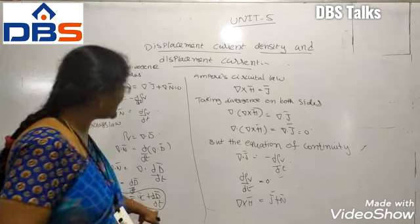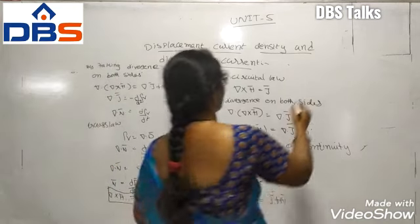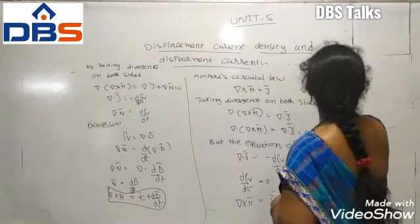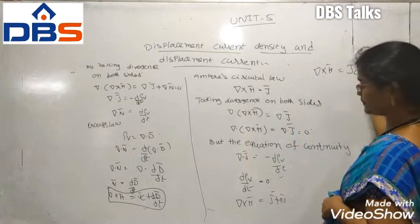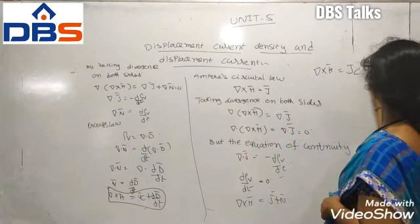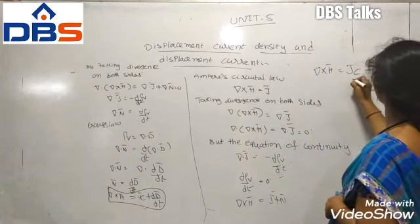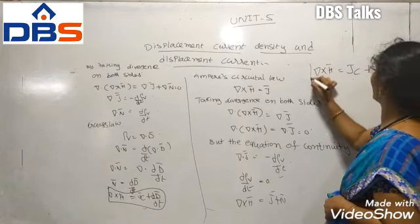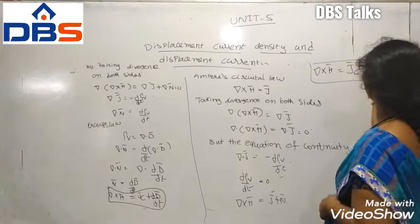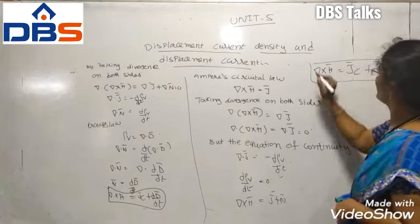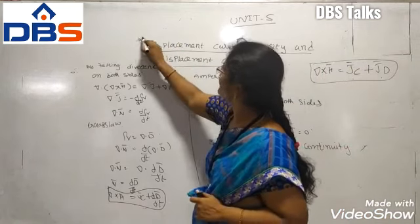Here dD-bar/dt is denoted as Jd, the displacement current density. So you can write: curl of H-bar equals Jc plus Jd — conduction current density plus displacement current density. This equation is very important and represents the displacement current density and displacement current.